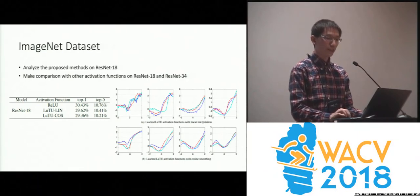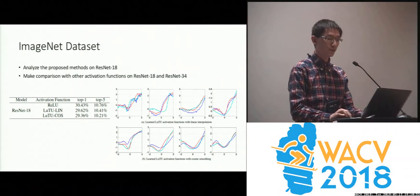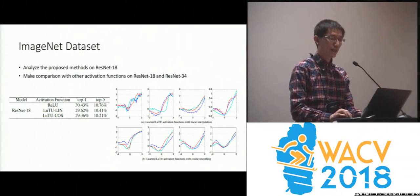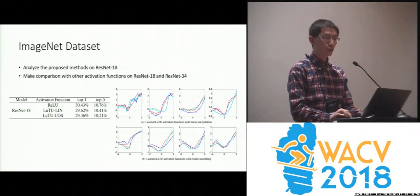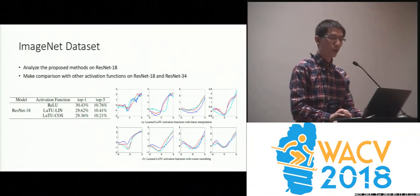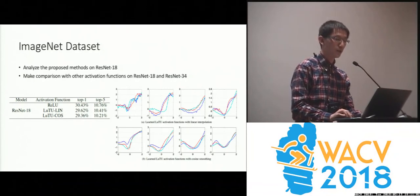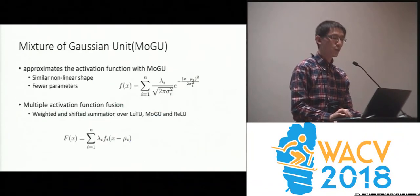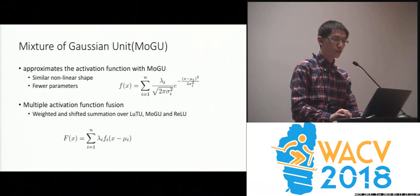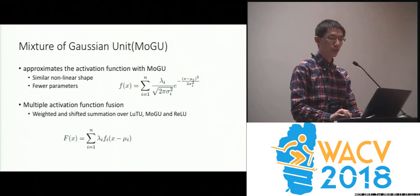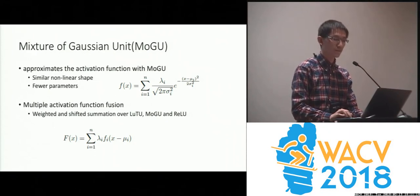By looking at the shape of all these functions, we noticed that most of them have a few valleys and peaks. We realized this kind of shape can be modeled with a one-dimensional mixture of Gaussian model. So we propose another type of activation function: the Mixture of Gaussian Unit. In this function, the mean, variance, and scale of each Gaussian function are learnable. Compared to the lookup table function, this function has much fewer parameters.